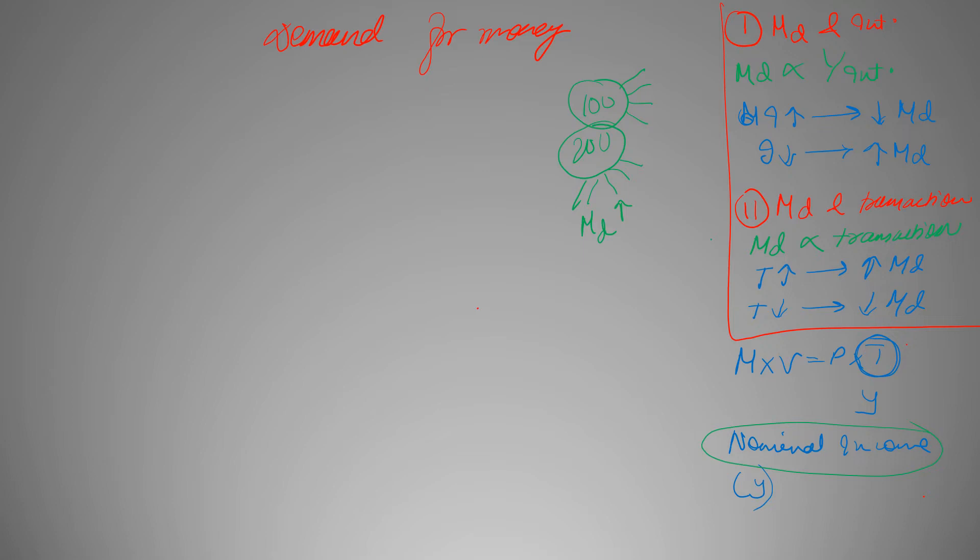So eventually transactions or level of transaction and nominal income will have the same effect. So we can say we are substituting value of T with Y. Now let's derive the formula.